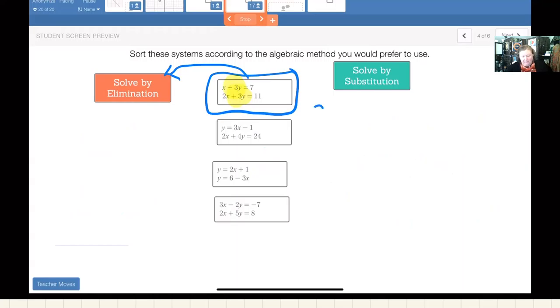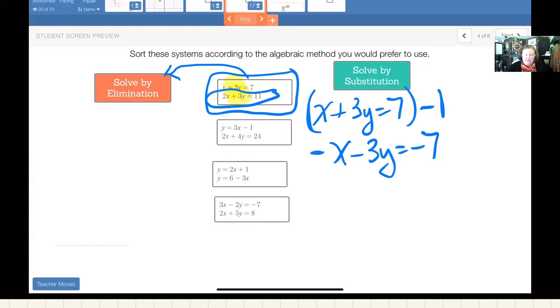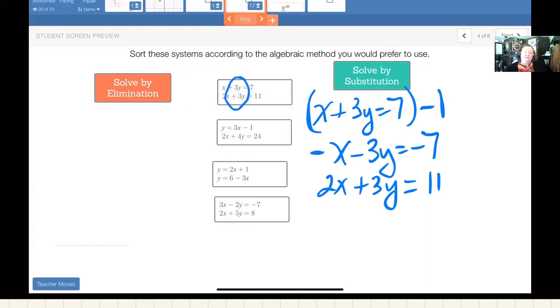And if I look at x plus 3y equals 7, and let's say I multiply that whole thing times negative 1. That would now be negative x minus 3y equals negative 7. And I'm going to take the second equation and put it underneath. 2x plus 3y equals 11. So you're probably thinking like, well, why did she multiply by negative 1? I did it because I wanted one of these to be positive 3y and the other to be negative 3y. Because now I'm going to add these two equations together.